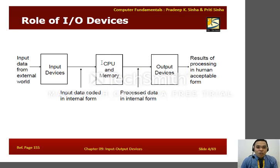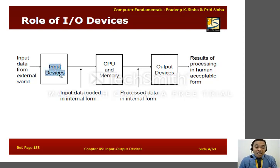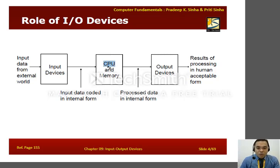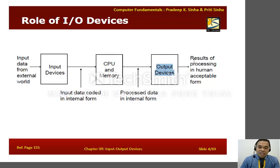Let's have a diagram to understand the role of I/O devices in general. As a computer user, you're going to enter data through input devices, and the data will be transformed into a machine-readable form. It will be processed in the brain of the computer — the CPU, as you learned last time — and the machine-readable form will be processed in memory. The data will become information and will be stored in output devices so that it will be projected in a human-acceptable form.